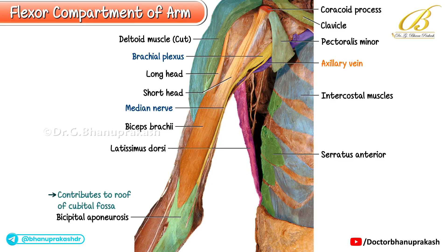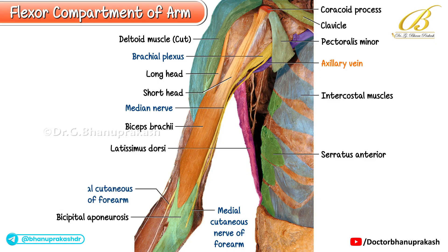In front of the elbow, on the medial side, a fine branch of the medial cutaneous nerve of the forearm is visible. Below and lateral to the bicipital aponeurosis, you can see the lateral cutaneous nerve of the forearm, and on the outer aspect lies the brachioradialis muscle.